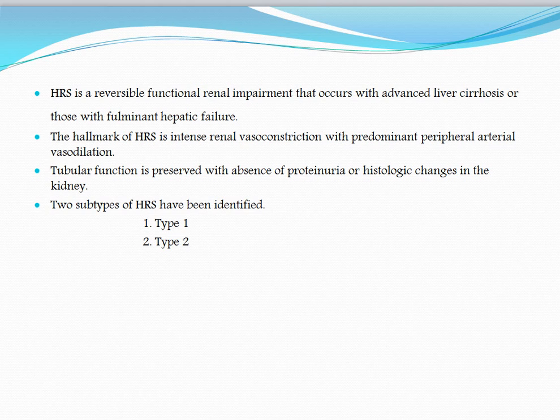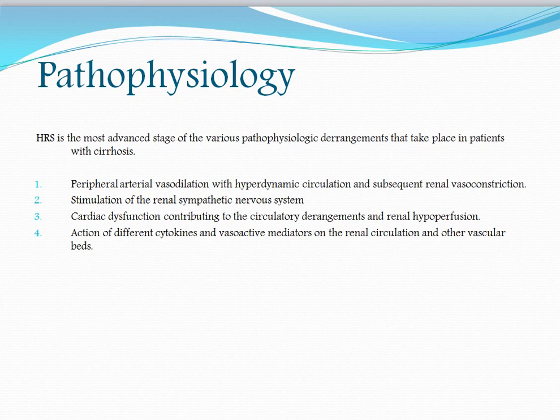Be smart — don't biopsy these patients, because cirrhotic patients are thrombocytopenic and you are putting them at risk for bleeding. There are two types of HRS: type 1 and type 2.